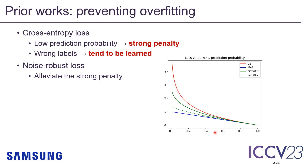This performance degradation is because of the property of cross-entropy loss. Cross-entropy imposes a strong penalty for a low prediction probability, and this forces wrong labels to be trained.